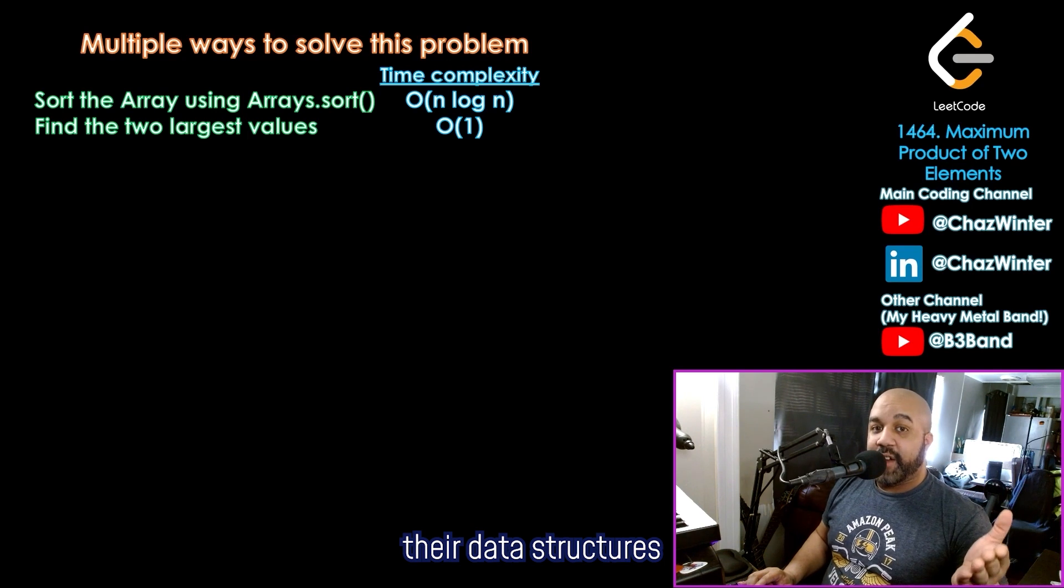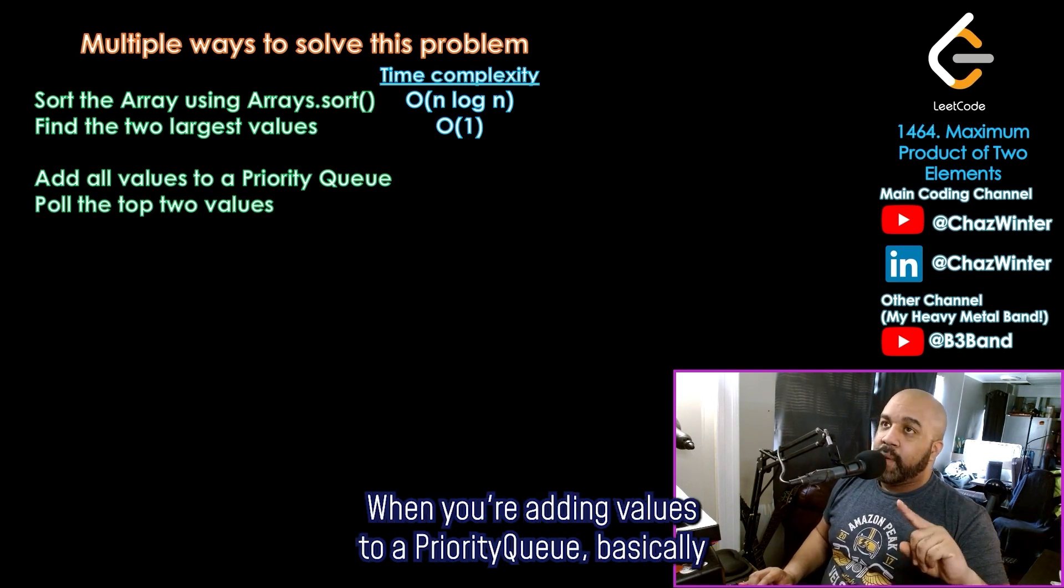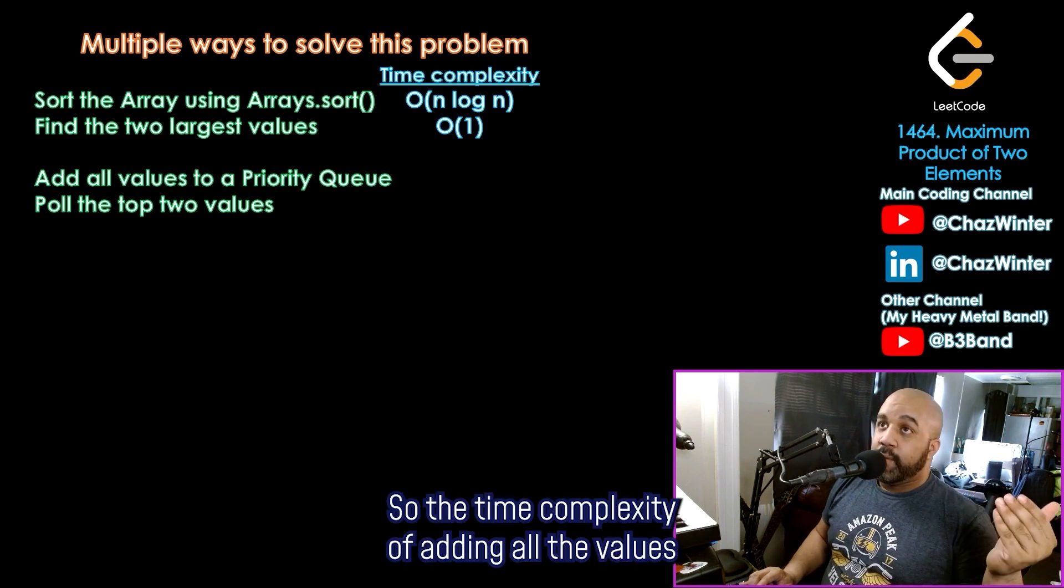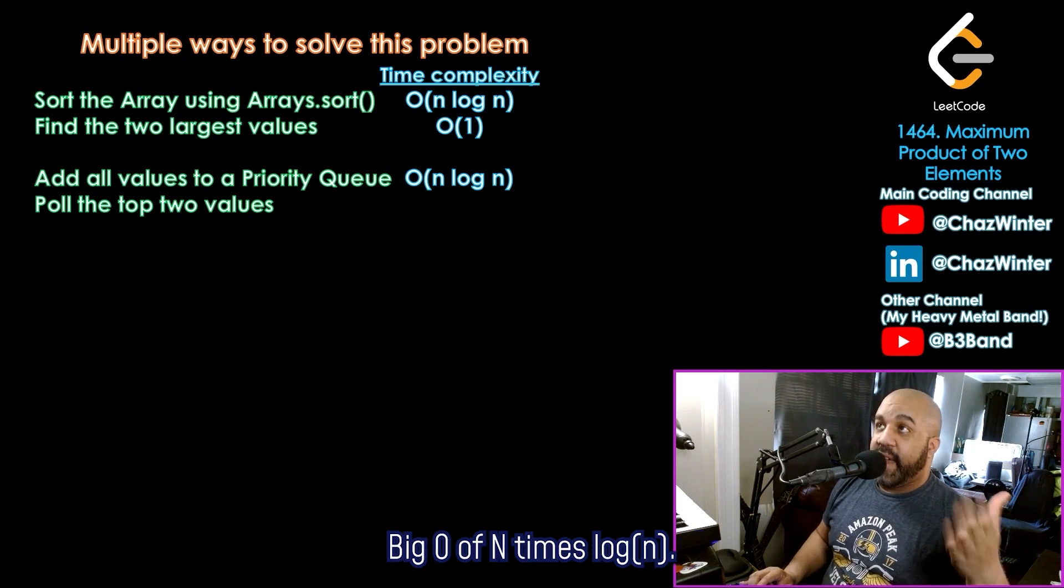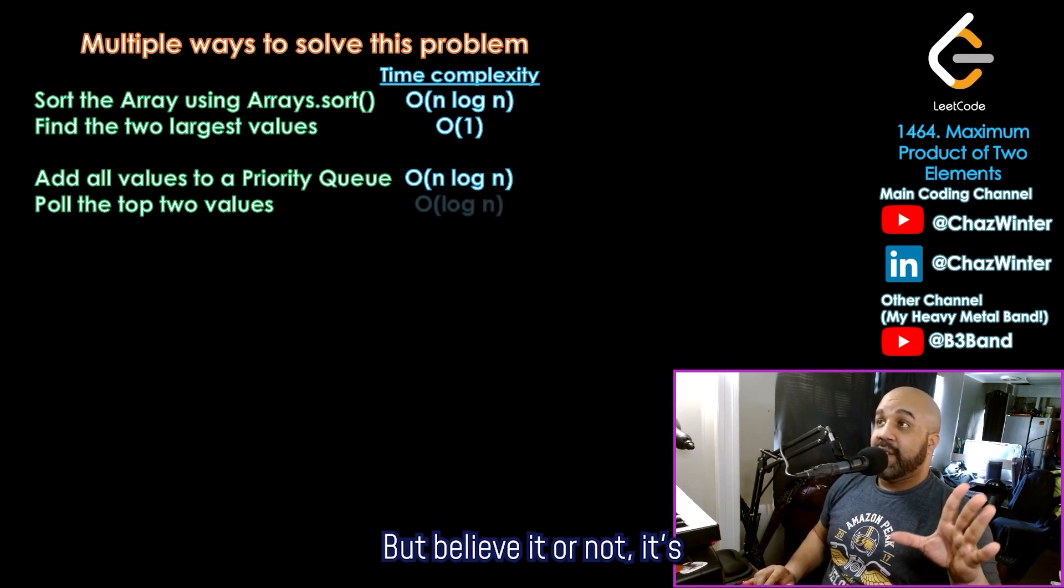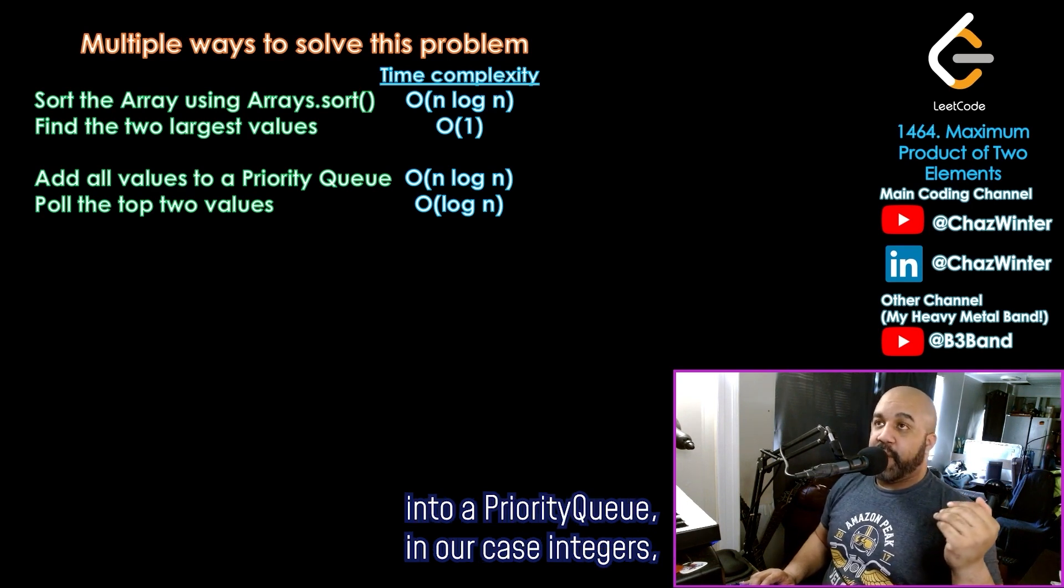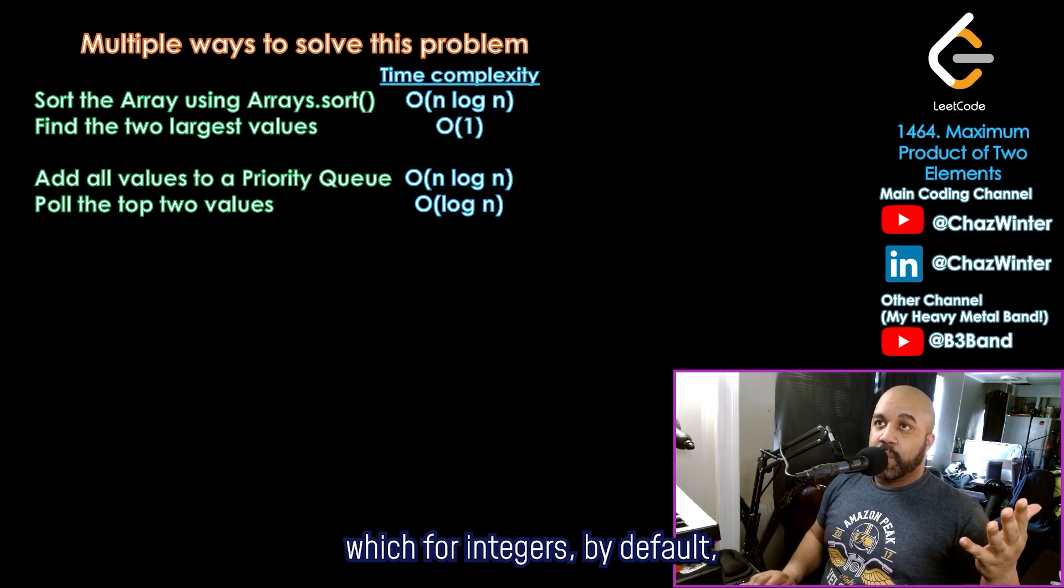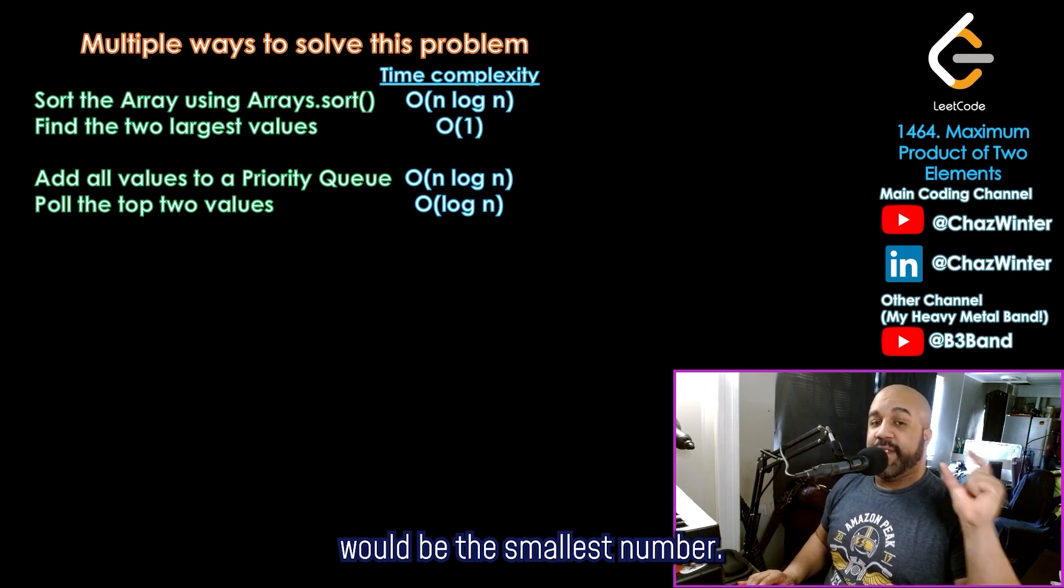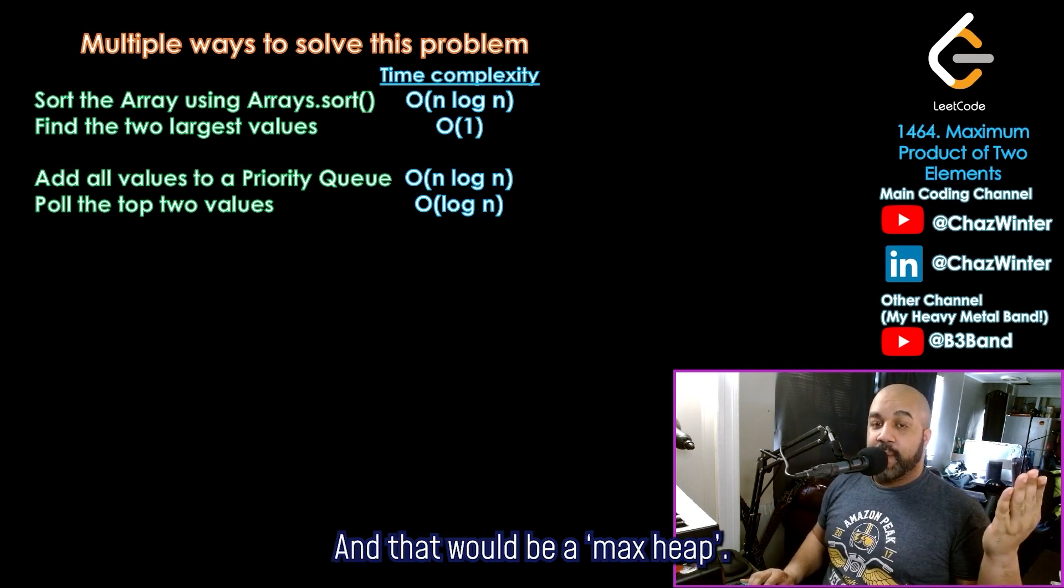Someone who's really been studying their data structures might also suggest to add all the values to a priority queue and then pull the top two values. Let's look at the time complexity of that. When you're adding values to a priority queue, basically it's setting up a tree structure for these values so they effectively are being sorted. So the time complexity of adding all the values to the priority queue will also be big O of n times log of n. Now you might be inclined to think that pulling the top two values from a priority queue would just be done in constant time, but believe it or not, it's actually log of n. So if you're not familiar with a priority queue or a heap structure, what happens is when you input values into a priority queue, in our case integers, they will be arranged in order of priority, which for integers by default, they would be arranged in increasing order so that the value with the biggest priority would be the smallest number. So that would be known as a min heap. In our case, we might actually want to reverse that so that the largest priority goes to the largest value, and that would be a max heap.